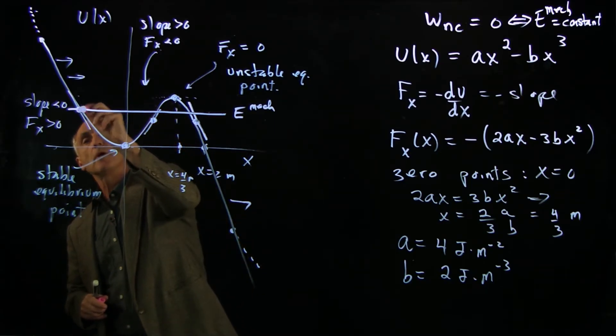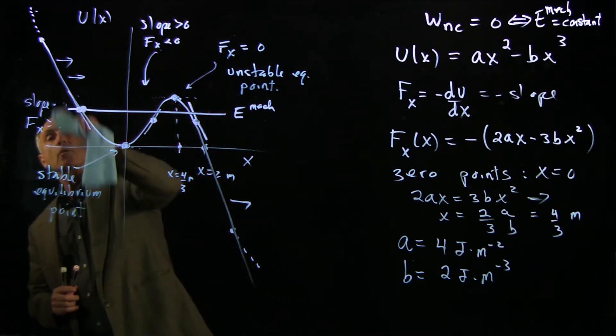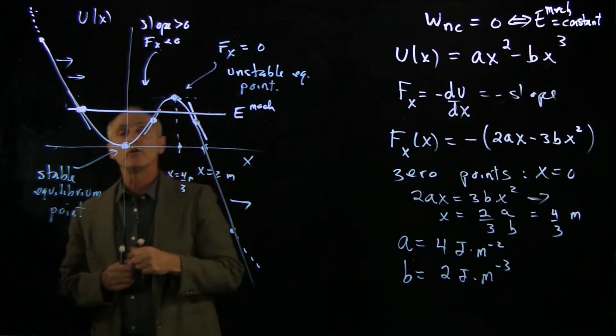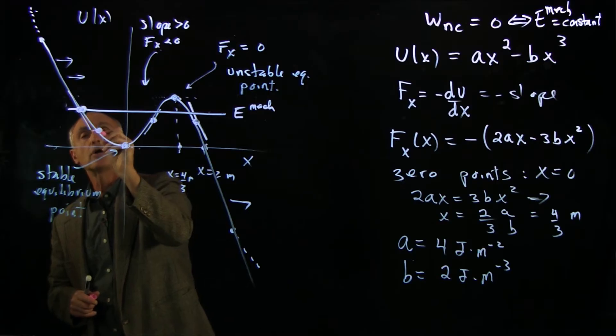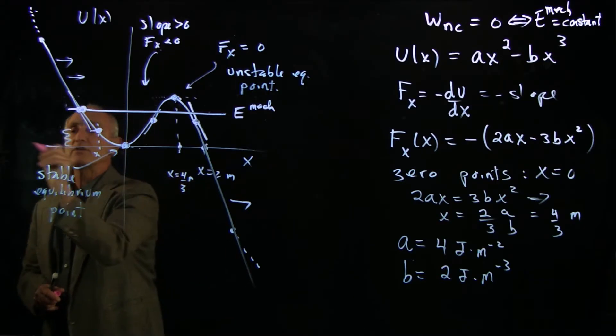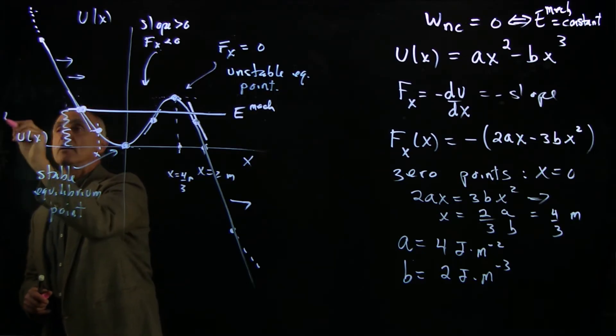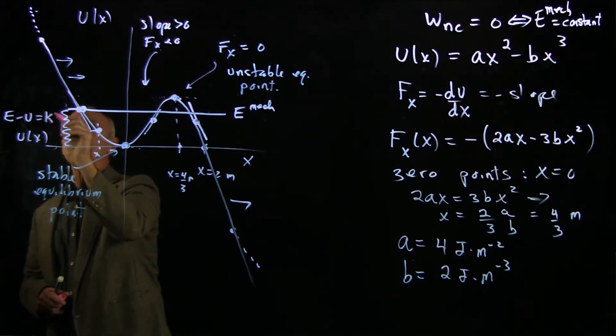A point over here. And at this point, let's just think about what our mechanical energy tells us. This is a special point, but let's begin with one right here. If our particle is at this location, then this represents the potential energy. And the difference between the energy and the potential energy is the kinetic energy.